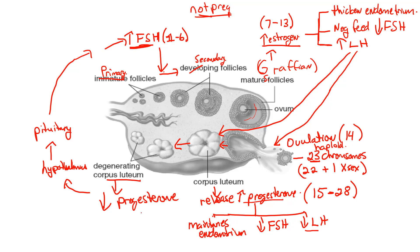Once progesterone levels go down, this causes the uterus to contract, and this will lead to a shedding of the endometrium. And that is known as menstruation. That starts to happen, and again, that happens around day one, and we start the whole cycle over again.